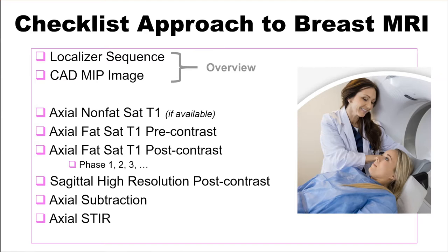This provides an overview. Next, move on to looking at any axial non-fat-saturated T1-weighted images, if available. From there, move on to the dynamic sequence with a fat-saturated T1 pre-contrast followed by the sequential phase 1, 2, and 3 post-contrast images. From there, move on to the sagittal high-resolution post-contrast sequence, then axial subtraction images, and lastly, axial STIR images.